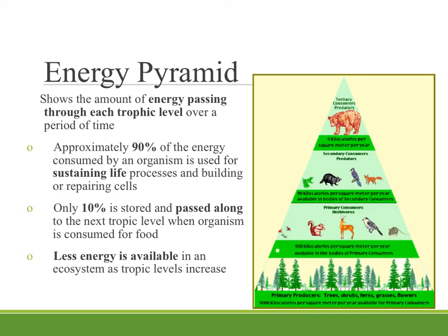The energy pyramid shows the amount of energy passing through each trophic level over a particular period of time. Looking at this energy pyramid, we're giving data per year. Our primary producers are taking in 9,000 kilocalories per square meter per year — as the sun comes in, it's transferred into chemical energy by photosynthesis. About 90% of that energy is actually used by the organism for sustaining its own life processes, for building and repairing cells and growth. Only 10% is put into storage, and that 10% is what is available to be passed along to whatever eats that organism. So out of those 9,000 kilocalories, only 900 are available moving up to the primary consumer level.